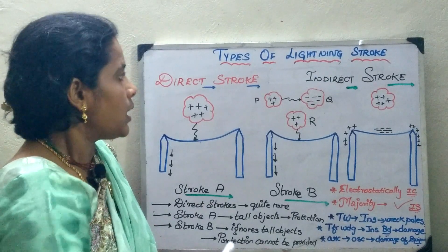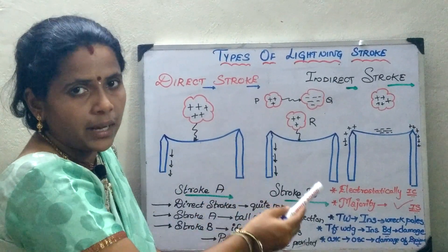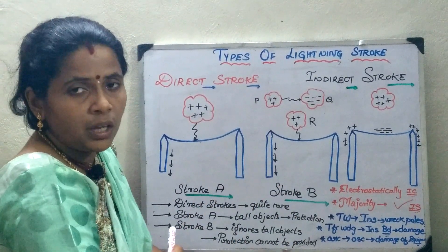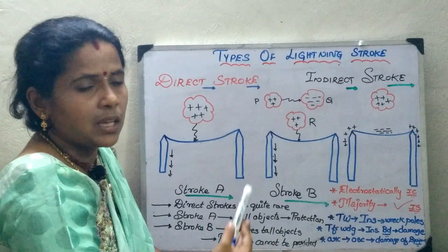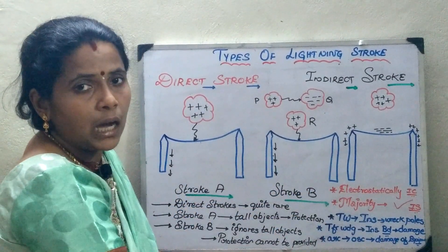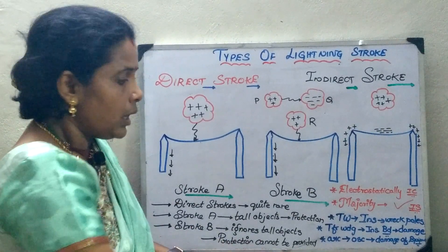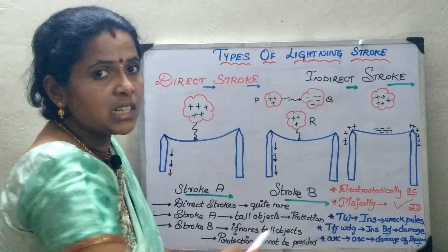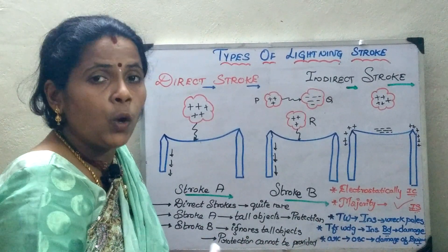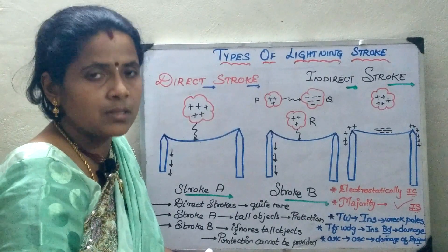In this session we have seen what is a direct stroke, what are indirect strokes, where protection can be given against direct strokes, that mostly occurring strokes are indirect lightning strokes, and what are the harmful effects of lightning. In the next session, we will be learning about the equipment by which we can protect against these overvoltages.